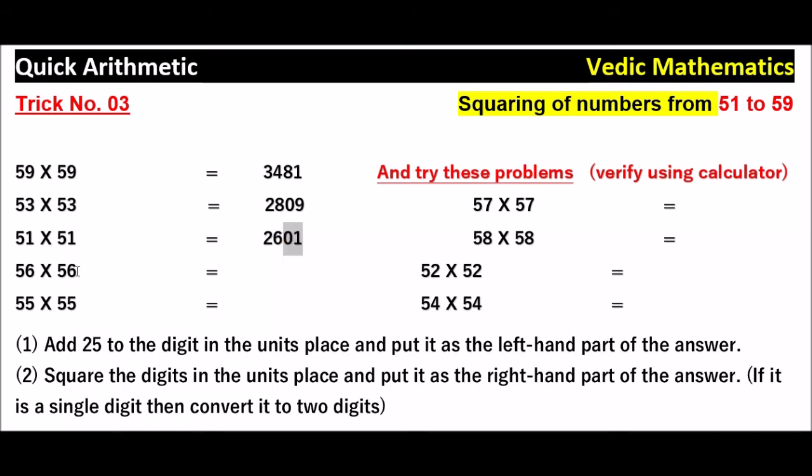You write here. Again 56 into 56, add 25 to 6 units place. 25 plus 6 is 31. 6 into 6 is 36. Again 55 into 55.